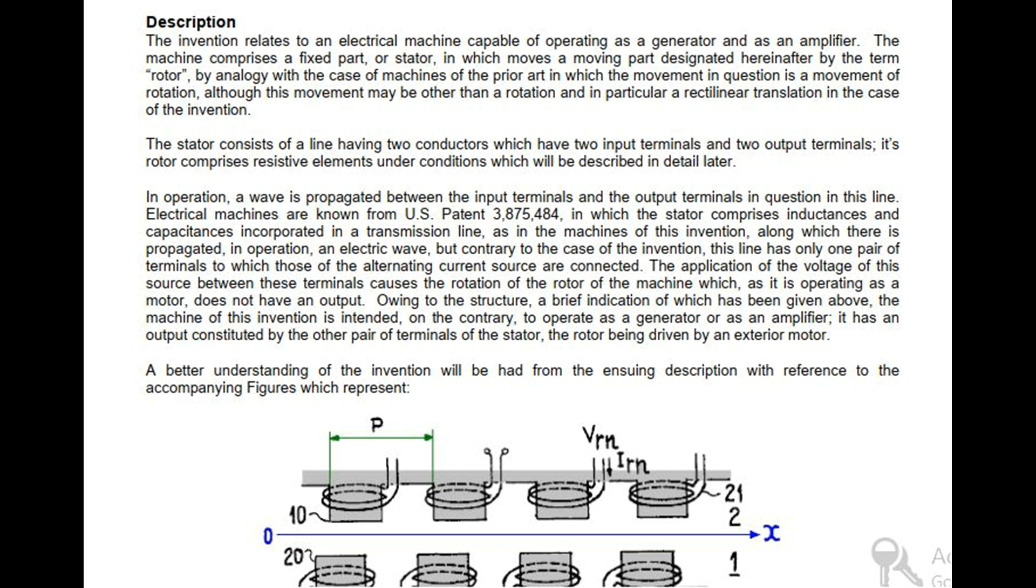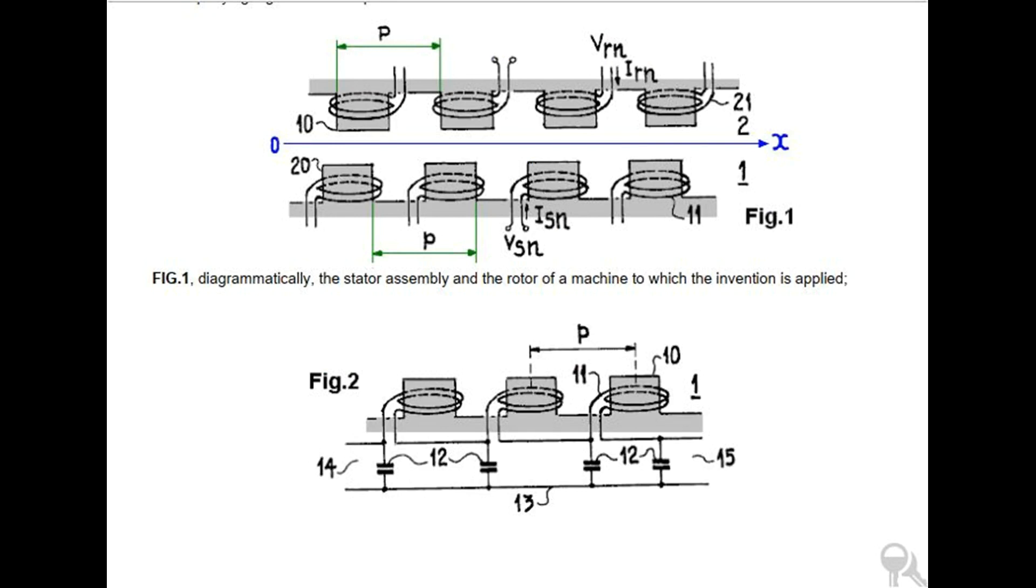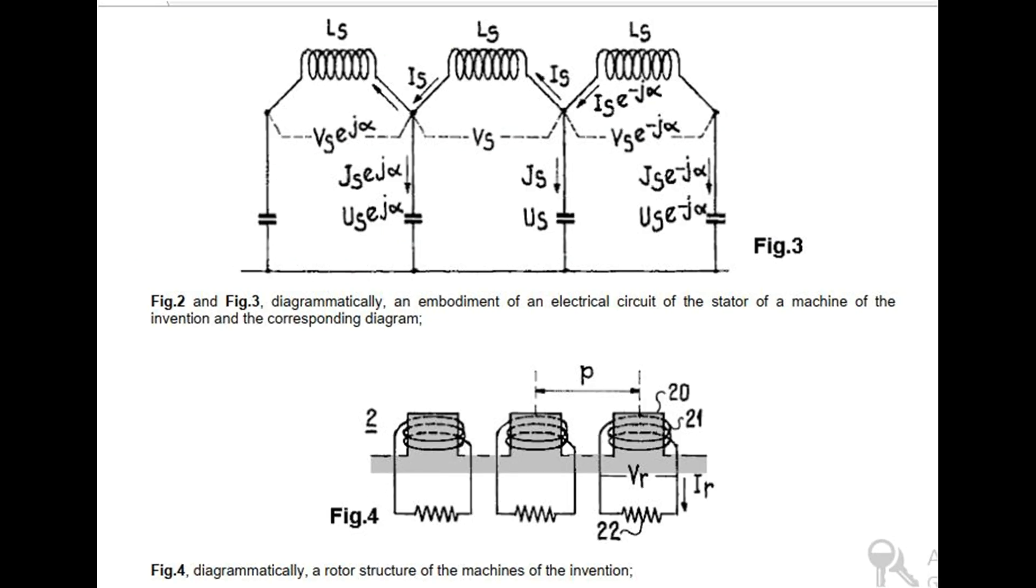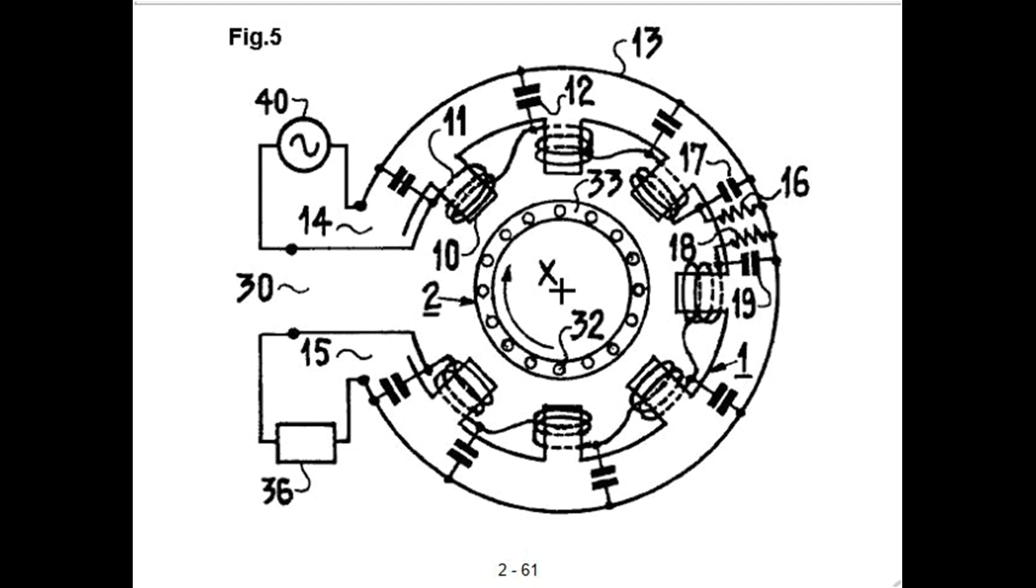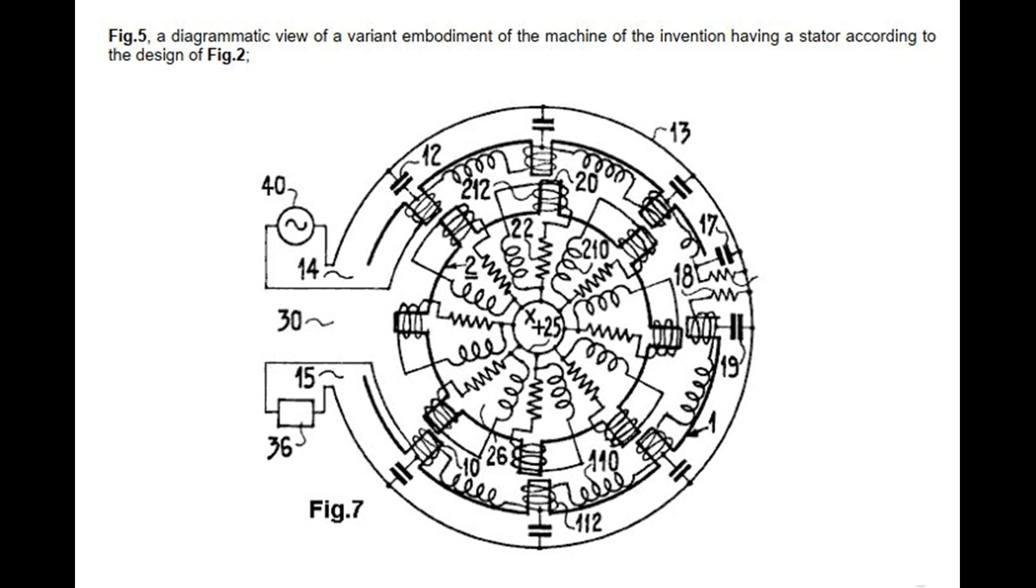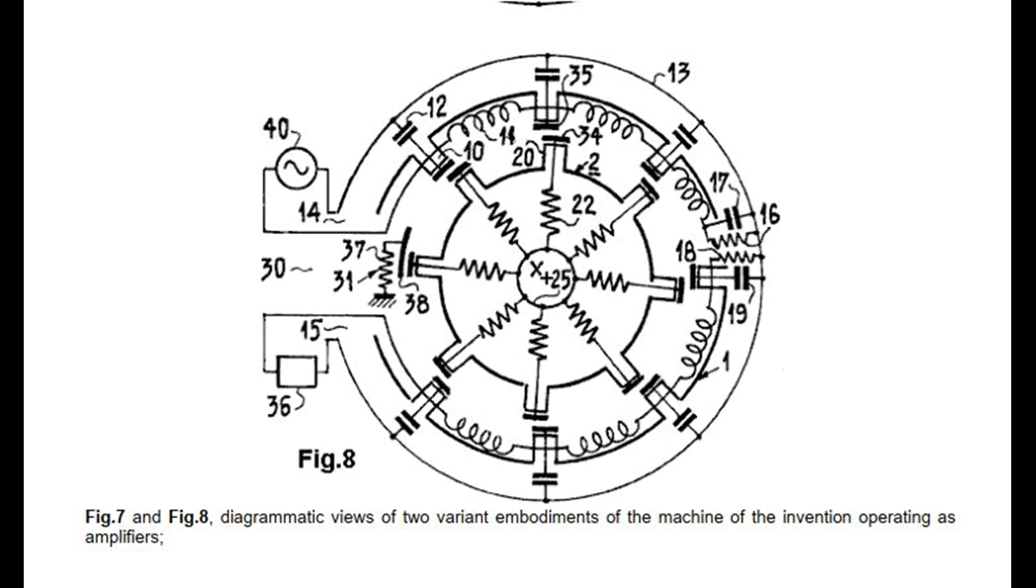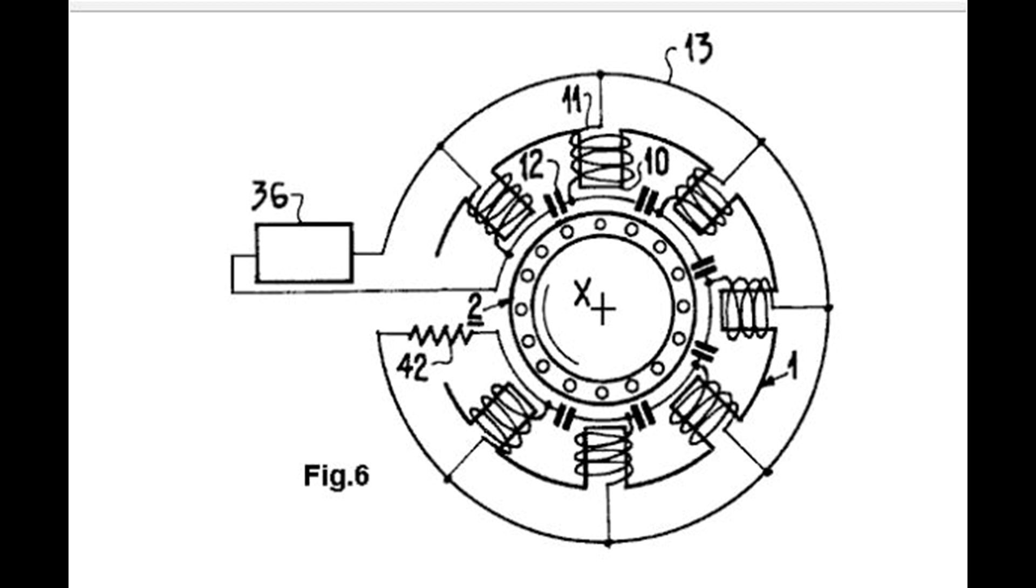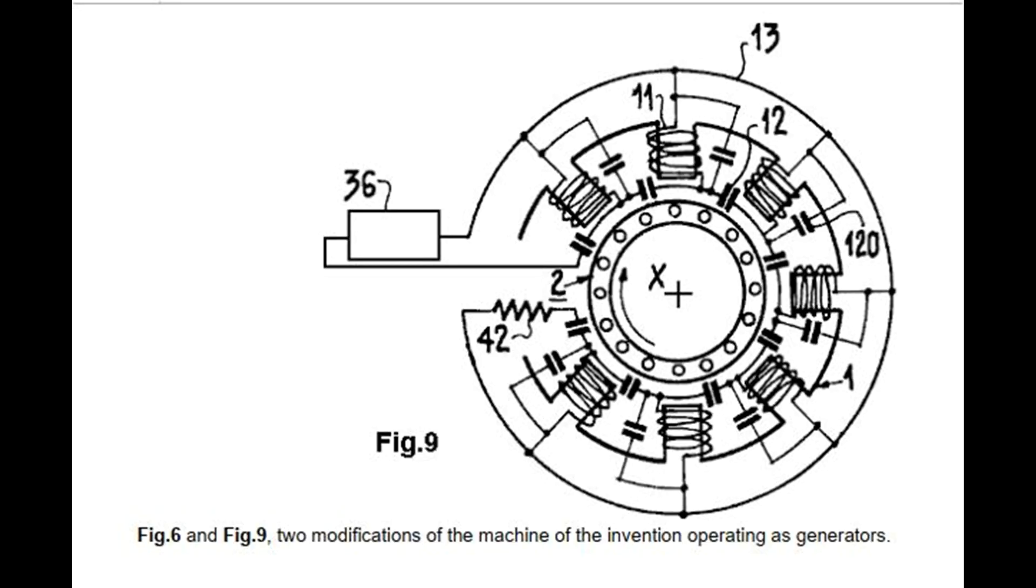A better understanding of the invention will be had from the ensuing description with reference to the accompanying figures. Fig 1, diagrammatically, the stator assembly and the rotor of a machine to which the invention is applied. Fig 2 and Fig 3, diagrammatically, an embodiment of an electrical circuit of the stator of a machine of the invention and the corresponding diagram. Fig 4, diagrammatically, a rotor structure of the machines of the invention. Fig 5, a diagrammatic view of a variant embodiment of the machine of the invention having a stator according to the design of Fig 2. Fig 7 and Fig 8, diagrammatic views of two variant embodiments of the machine of the invention operating as amplifiers. Fig 6 and Fig 9, two modifications of the machine of the invention operating as generators.